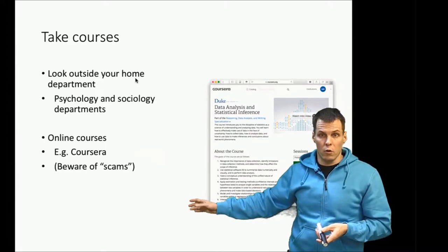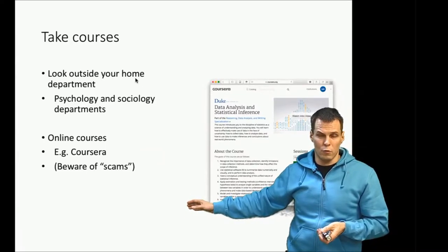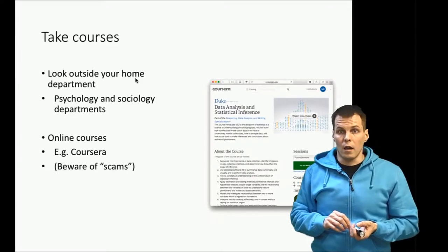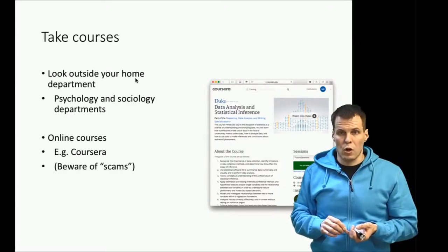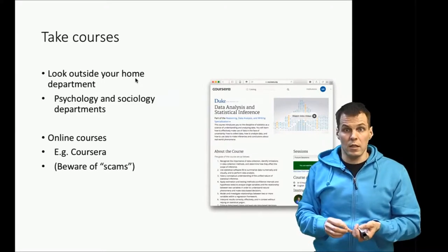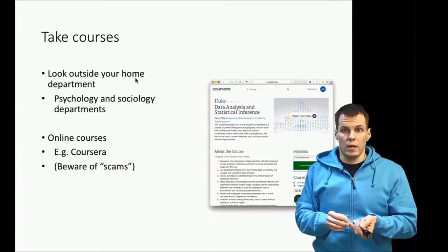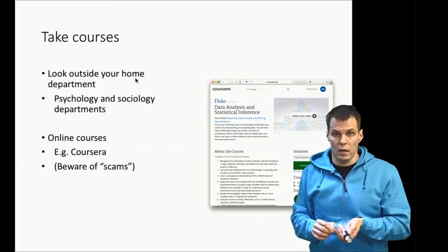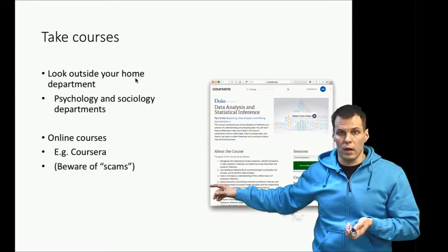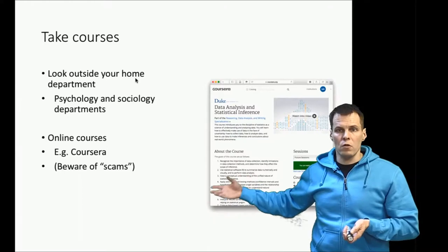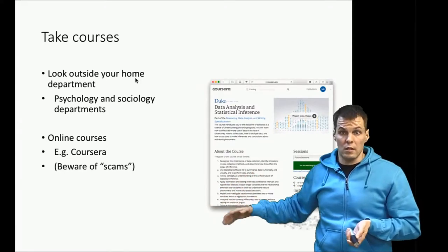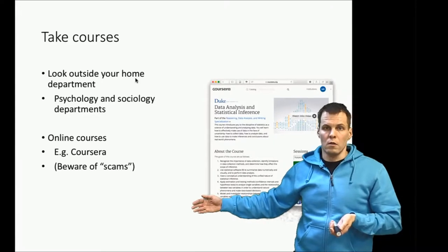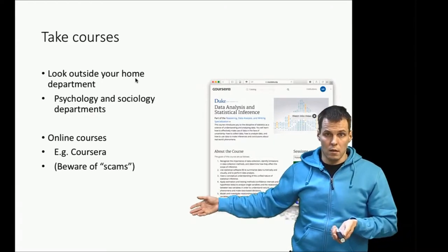When looking at whether to take an online course, there are two things to check. First, is the person an expert? If you're taking an econometrics course run by an econometrics professor, it's probably better than one run by a marketing professor. Look at whether the specialty of the instructor matches what they're teaching. Another thing to check is whether the course is branded by a university, because universities don't want anyone teaching incorrect things using their brand.